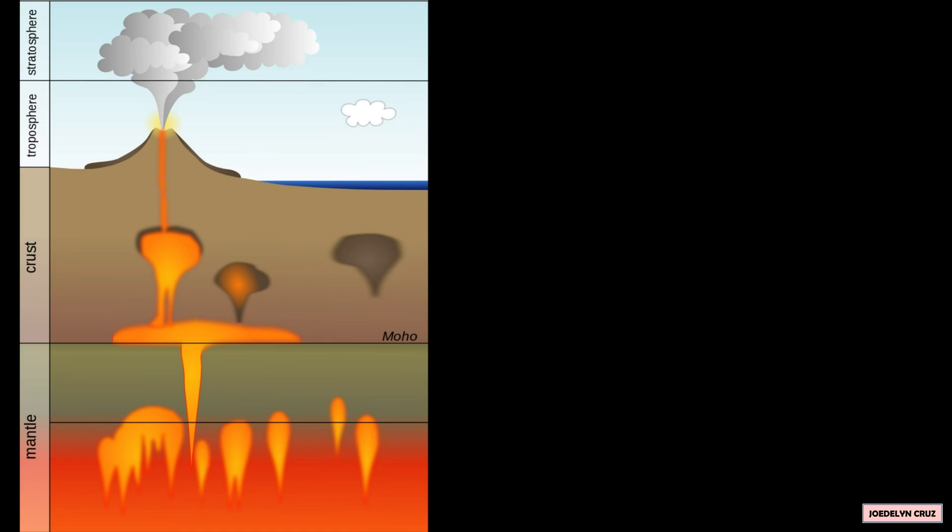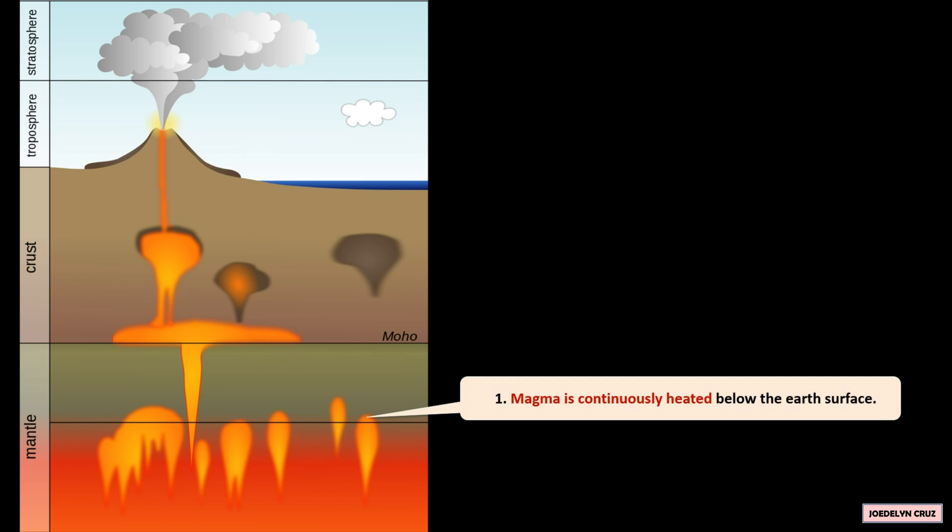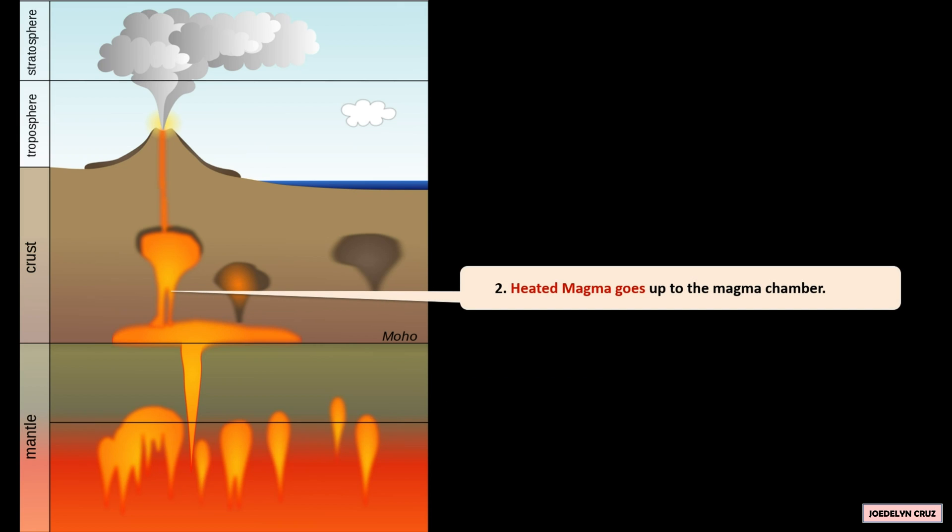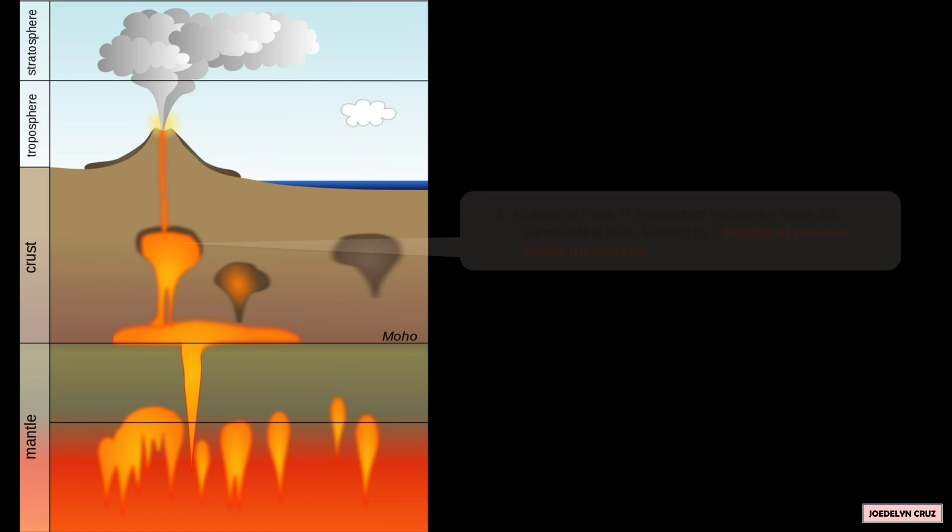These are what happened during volcanic eruptions. Magma is continuously heated below the Earth's surface. Heated magma goes up to the magma chamber. As magma rises,